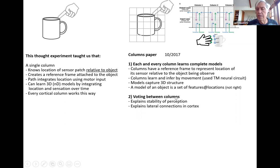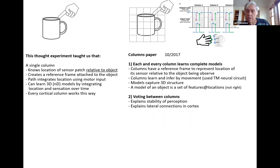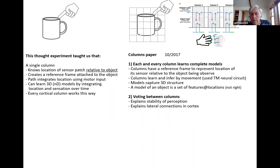The second big idea in the Columns paper was voting between columns, which solved a whole bunch of mysteries. The two primary ones were the stability of perception — when you're looking at the world, you're not aware your eyes are moving. Bruno Olshausen once said to me that if you can solve the stability of perception problem, it deserves a Nobel Prize. It also explained so many of the lateral, non-hierarchical connections we see in the cortex that had no prior explanation.